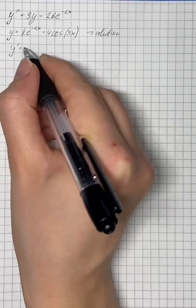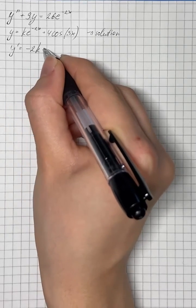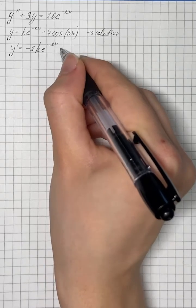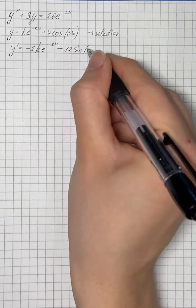So that's the first derivative equals to negative 2k e to the power of negative 2x and minus 12 sine of 3x.